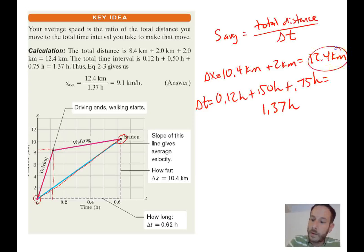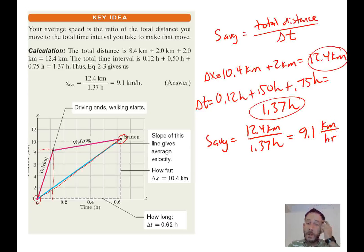All right. So we have our distance there. We have our time. We can just plug that into the equation. So our average speed is going to be 12.4 kilometers divided by 1.37 hours, and we'll get 9.0 kilometers an hour. All right.